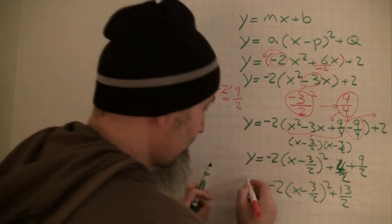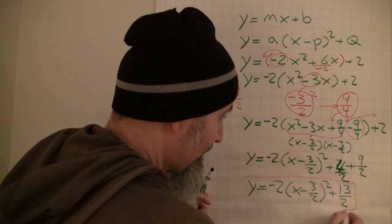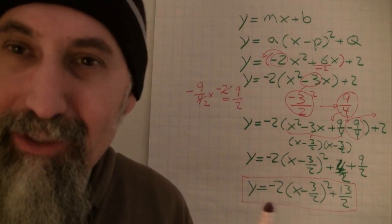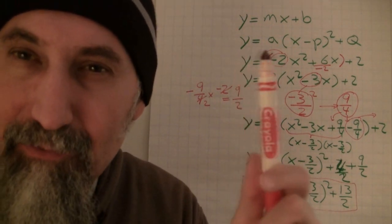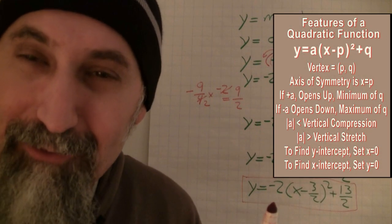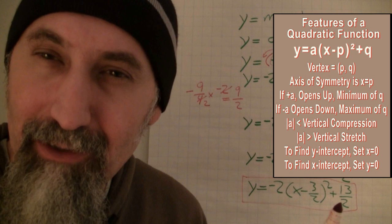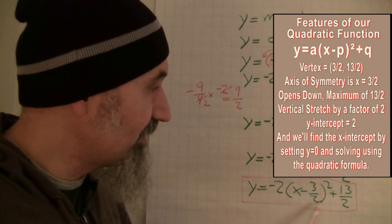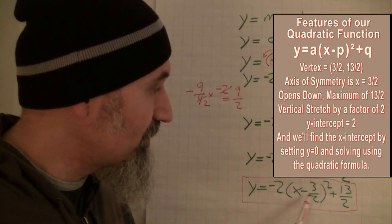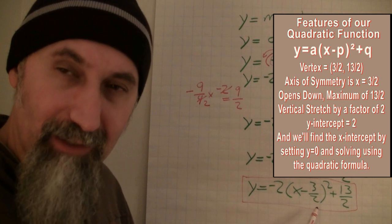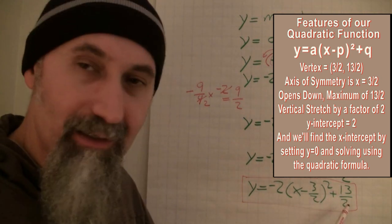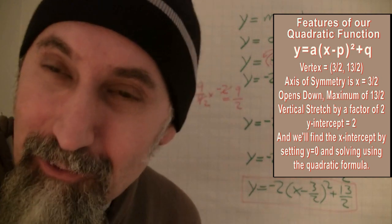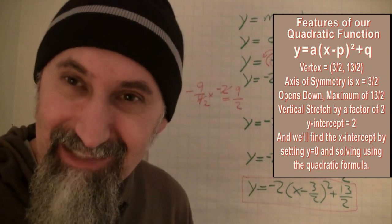This equation is now in vertex form. All we have to do is read off everything that's going on here. The vertex is going to be 3 over 2 — which is the opposite sign of what's in the bracket — and 13 over 2. So the x-coordinate is 1.5 and the y is 13 over 2, which is 6.5. Our vertex is at (1.5, 6.5).